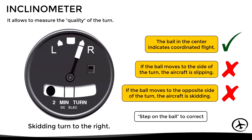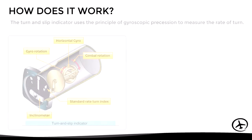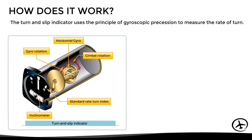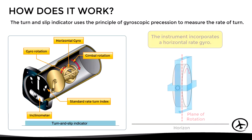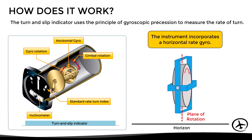Let's now see how this instrument works internally. The turn and slip indicator uses the principle of gyroscopic precession to measure the rate of turn. To do so, it incorporates a horizontal rate gyro which is restricted in one of its axes.